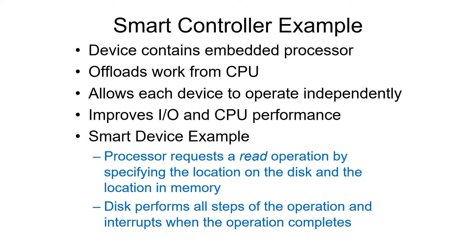Some controllers have embedded processors that handle a lot of processing of information. This offloads the work from the CPU, allowing the I/O controller to run independently and letting the CPU get more processing done. Each device runs slightly differently, and I/O controllers have to be able to operate each one. In this example, the processor sends a read request to the smart I/O controller, giving it the location on disk to read and the location in memory where it wants the data stored. The disk then does all the steps: starts spinning, moves the arm, reads the information into memory, and when all done, interrupts the CPU to tell it the operation is complete or that an error has occurred.